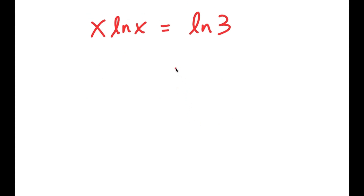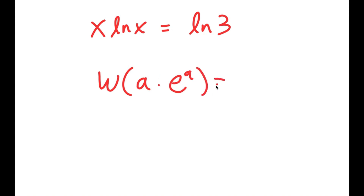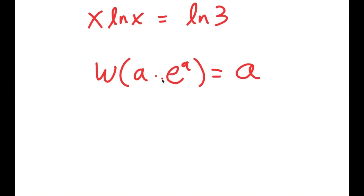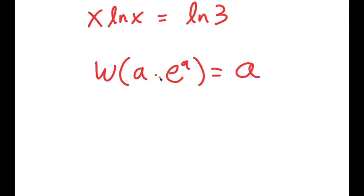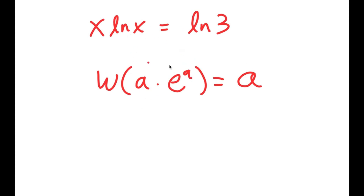Now I'm going to use an important formula called the Lambert W formula. It states that if I take W of something in the form a times e to the power of a, then this is equal to a. So this is the Lambert W formula. In this case, I'm going to rewrite this so that it suits the Lambert W formula — we need to change this to be in the form a times e to the power of a.